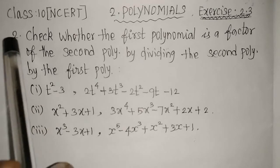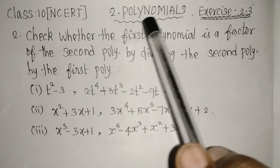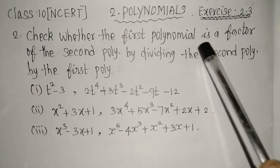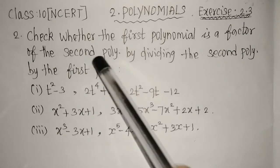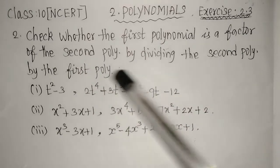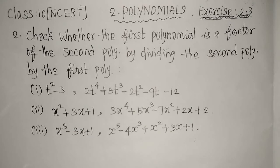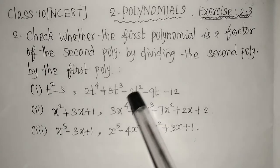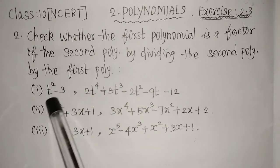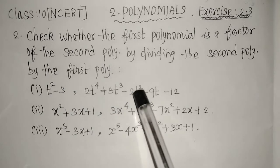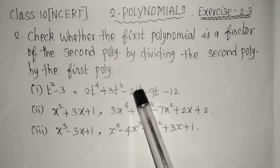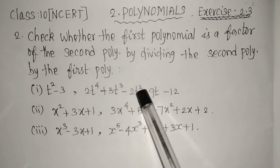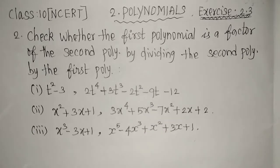Welcome to my channel. Today we will see Class 10 NCERT Chapter 2 - Polynomials, Exercise 2.3, Question 2. We are asked to check whether the first polynomial is a factor of the second polynomial. We check this by dividing the second polynomial by the first. If we get remainder zero, it is a factor; if we get anything else, it is not a factor.